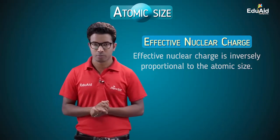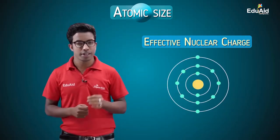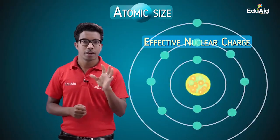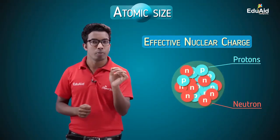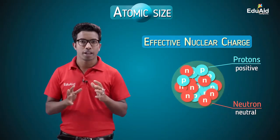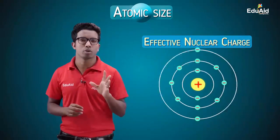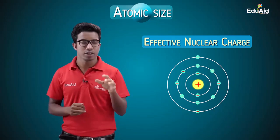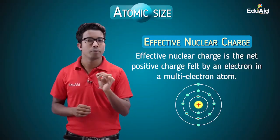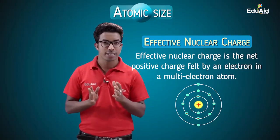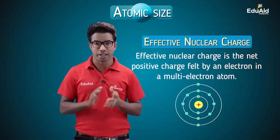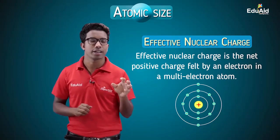We should first understand what effective nuclear charge is. Nuclear charge is the charge provided by the nucleus. In an atom, the nucleus contains protons and neutrons. Protons have positive charge and neutrons are neutral, so the nucleus as a whole provides only positive charge. Outside the nucleus, electrons have negative charge. Effective nuclear charge is defined as the net positive charge felt by an electron in a multi-electron atom — meaning all atoms except hydrogen.